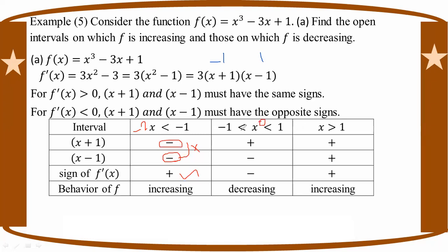From the sign table: minus 1 and 1 are the critical points. For A greater than 1, the signs are positive and positive, so F prime is positive — increasing function. The test confirms this.